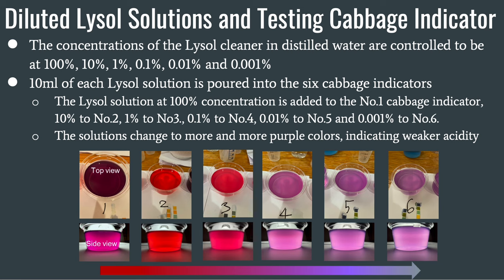For my diluted Lysol solution and testing the cabbage indicator, the concentration of the Lysol Cleaner in distilled water is set at 100%, 10%, 1%, 0.1%, 0.01%, and 0.001%. 10 ml of each Lysol solution is poured into the six cabbage indicators: 100% to cup one, 10% to cup two, 1% to cup three, 0.1% to cup four, 0.01% to cup five, and 0.001% to cup six. The solutions change to more and more purple colors, which indicate weaker acidity.